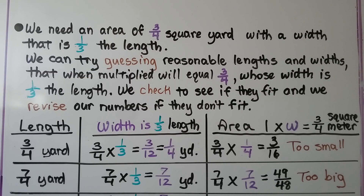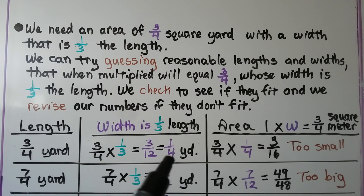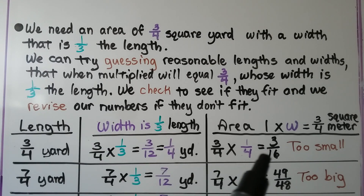We need an area of three-fourths square yard with a width that is one-third the length. We can try guessing reasonable lengths and widths that, when multiplied, will equal three-fourths, whose width is one-third the length. We start with a length of three-fourths yard, and one-third of that means we multiply three-fourths times one-third, which is three-twelfths, simplified to one-fourth yard. For the area, we multiply three-fourths times one-fourth and get three-sixteenths. That's too small — that's not three-fourths.